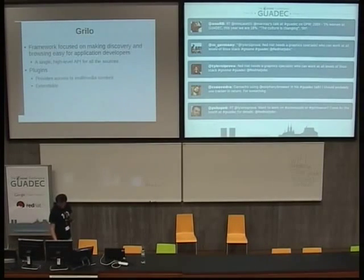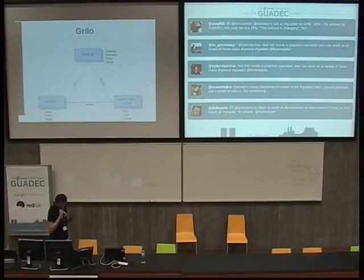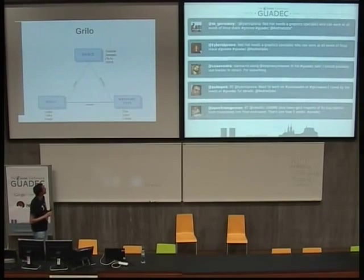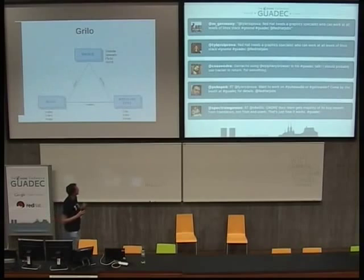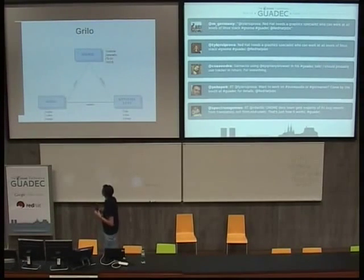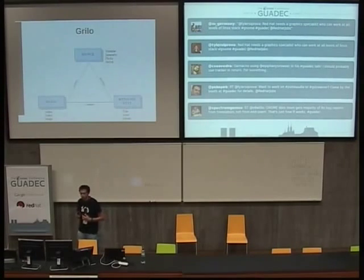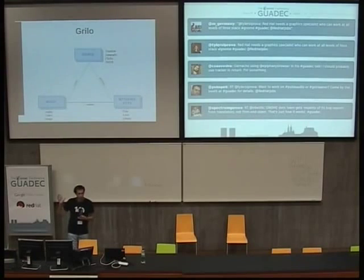Just a review of the main concepts of Grilo. There are three concepts involved. The first one is the source — sources are basically the source of information, for instance YouTube, Jamendo, or your IMDB database. It's the wrapper that gets access to the content and information that is out there.